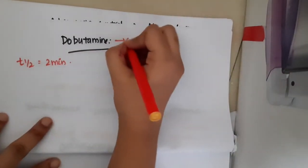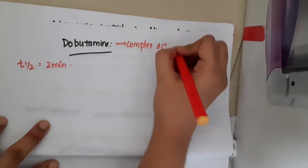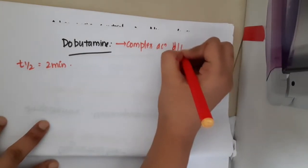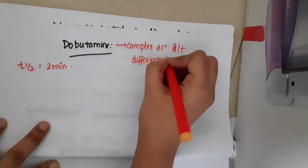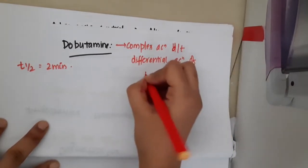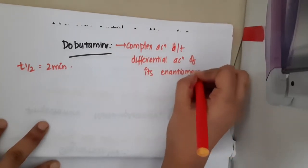Dobutamine has complex action due to the differential action of its enantiomers. The enantiomers present have differential actions, resulting in this complex action.